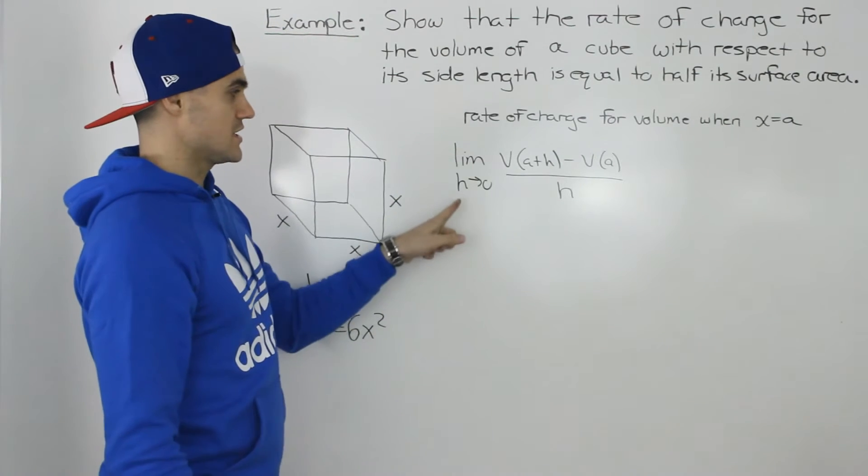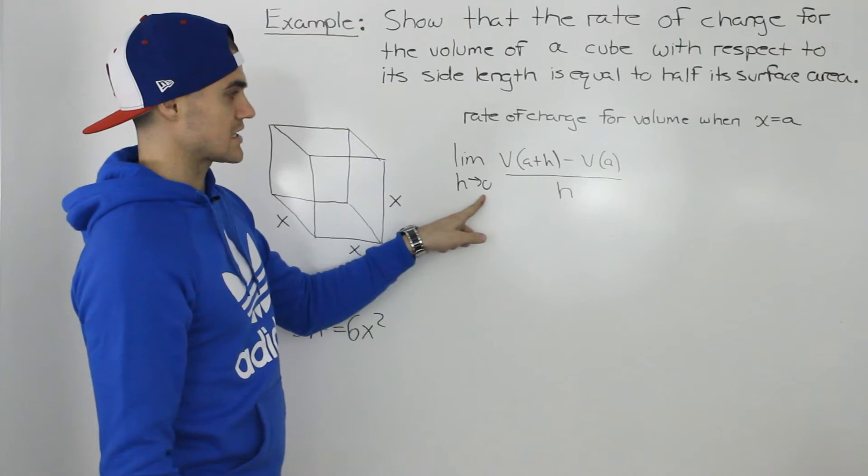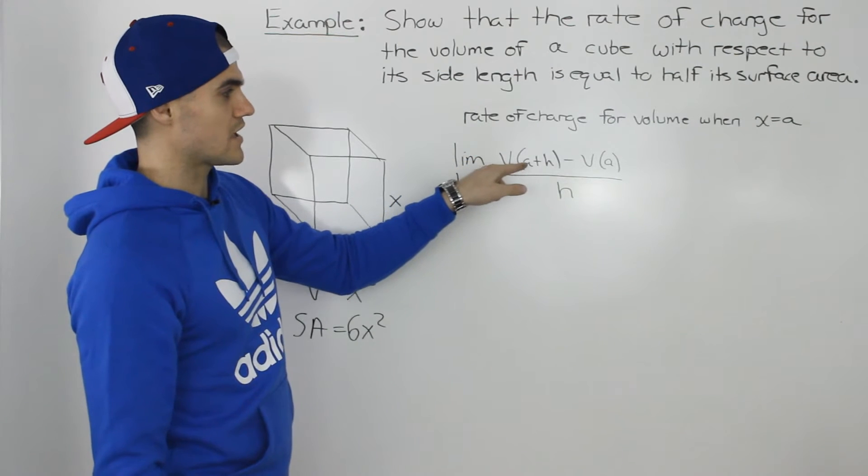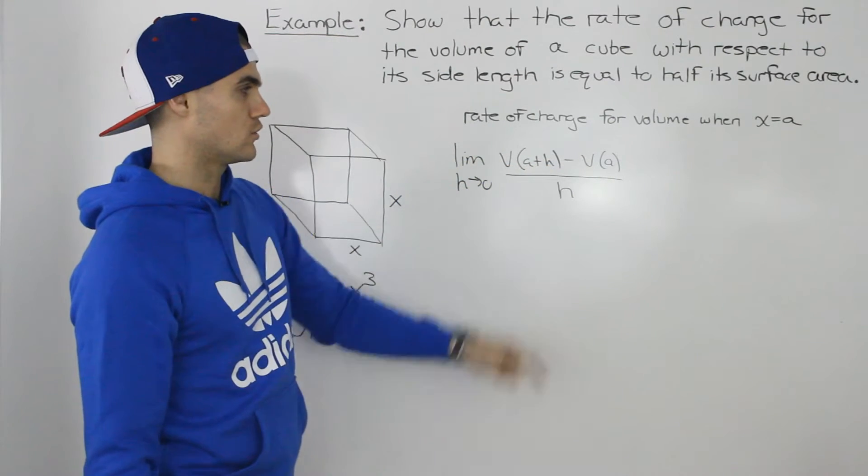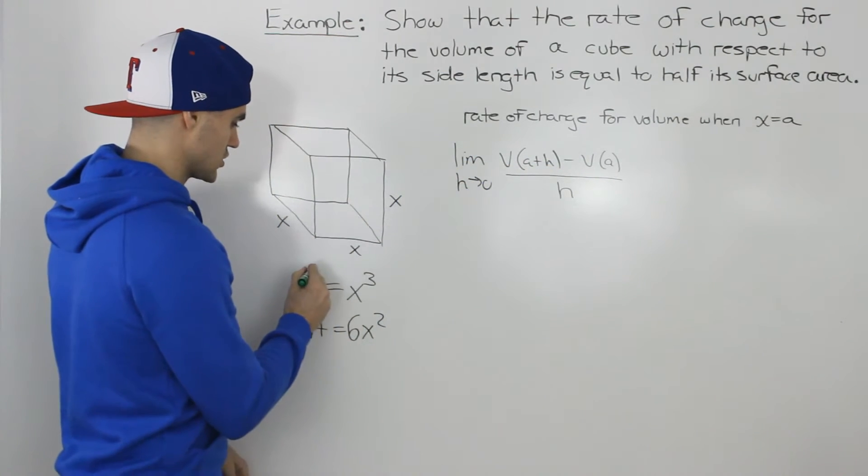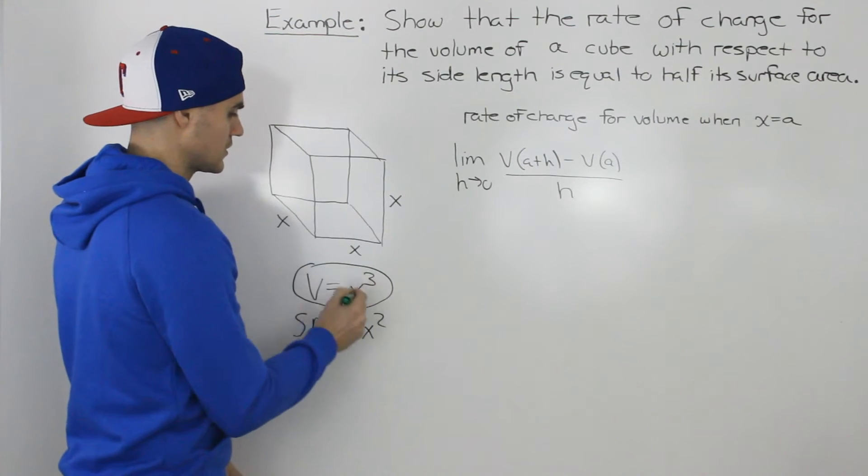So we're going to use the difference quotient, the limit as h goes to 0 of v(a + h) minus v(a) all over h. And the equation that we're using is the volume one, v equals x cubed.